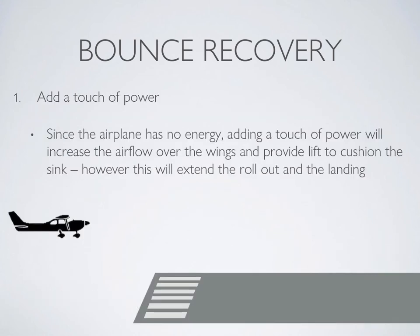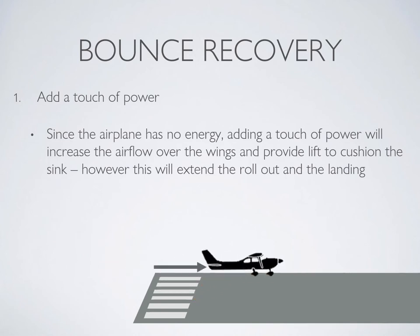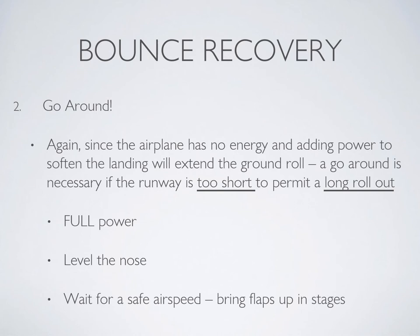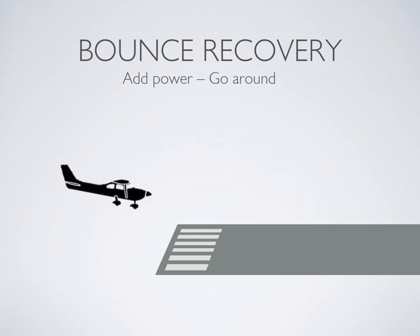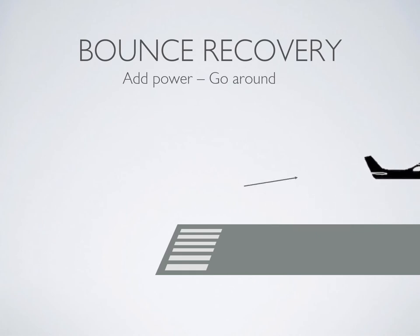You have two options. First, you can add a touch of power — this might work if the bounce is not too severe and the landing needs to be smoothed out. Adding power generates airflow back over the wings so the airplane can settle more softly, though the consequence is a much longer landing roll. The second option — and always the option if the runway is short or the bounce is severe — is the go-around. Since the airplane has little to no energy following a bounce, full power must be applied. Make sure the nose is slightly higher than level and once safe airspeed is confirmed, bring the flaps up in stages.